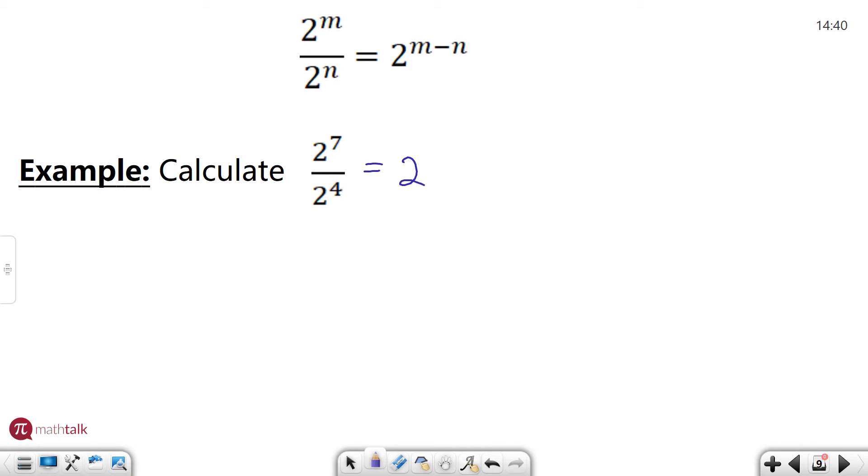We have 2 to the seventh divided by 2 to the fourth. The rule says all we have to do is subtract the exponents. So 7 minus 4 is 3 and there's our answer.